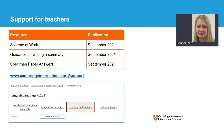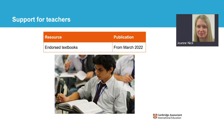You can download all of these resources from our School Support Hub at cambridgeinternational.org/support. Endorsed resources from Cambridge University Press and Hodder Education are available from March 2022. Further details about the textbooks can be found on our public website or on the publishers' websites.